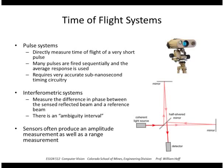These ranging sensors often produce both an amplitude measurement and a range measurement, so you get a light intensity image as well as a range image. Microsoft's Kinect sensor is a type of structured light system that gives you both a range image and an intensity image.